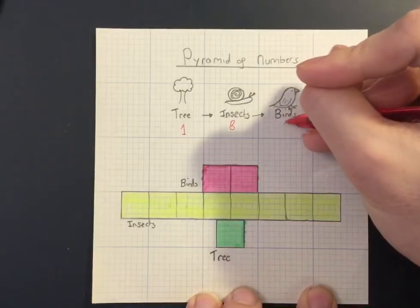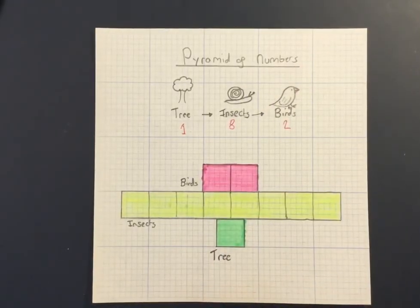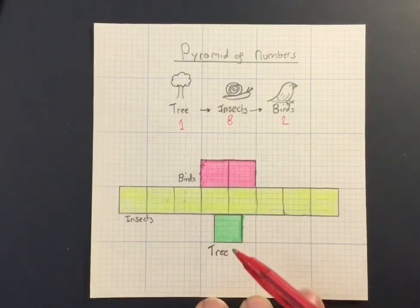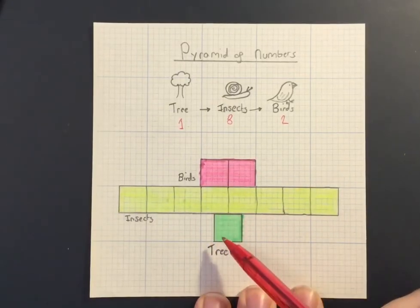This one is not really a pyramid, it's more of a stack, and that's why I prefer the term stack of numbers to help you remember. So in this case I've got one large square at the bottom to represent our one organism.